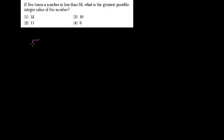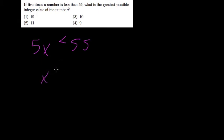If 5 times a number, 5x, is less than 55, what is the greatest possible integer value of the number? We'll just solve for x. Divide both sides by 5, and x is less than 11.